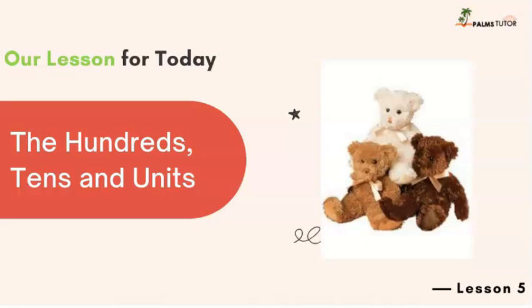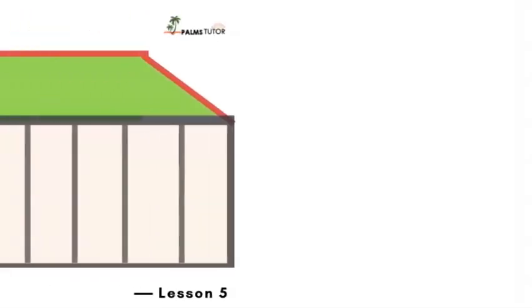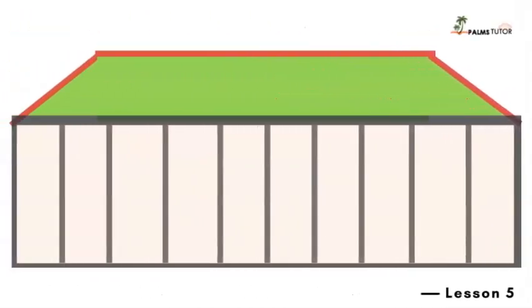Before we start today's class, you will need to draw your second place value chart on another cardboard. We have three cardboards, so let's use another one now. Just draw it out like this — you can look at the one you have already done. You may need to pause this lesson, go and bring it, and then draw it out with no labeling.